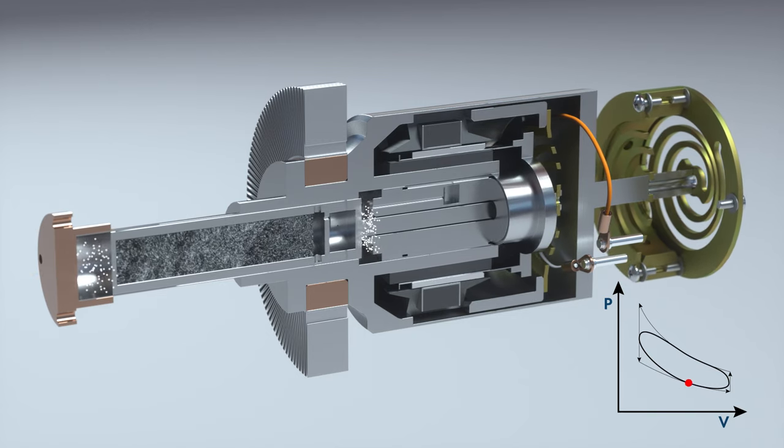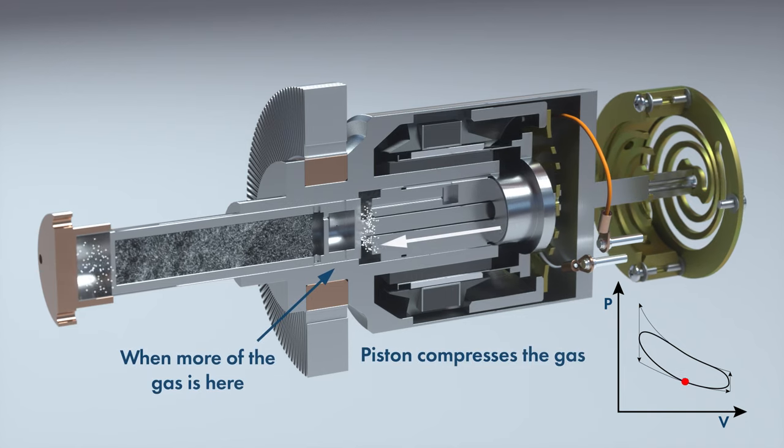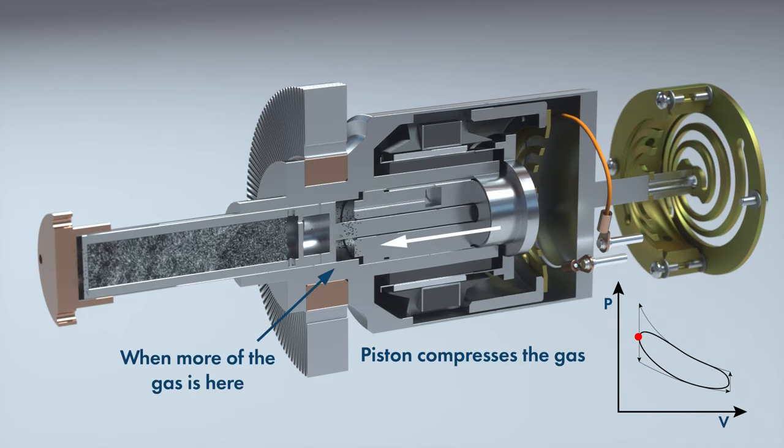When the displacer movement results in the bulk of the working gas being located between the displacer and piston, the piston compresses the gas.